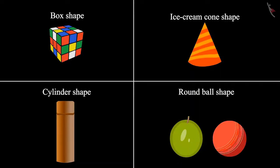So children, did you see how Chotu and Neha identified four different shapes and kept them in different boxes? This is like a round ball shape, ice cream cone-like shape, box-like shape, and cylinder shape.